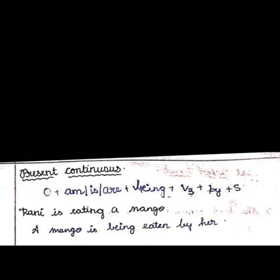For example: 'Rani is eating a mango.' Here, mango is the object and Rani is the subject. As per the rule, the object comes first. So the passive form is: 'A mango is being eaten by her.' This is the form for the present continuous tense.